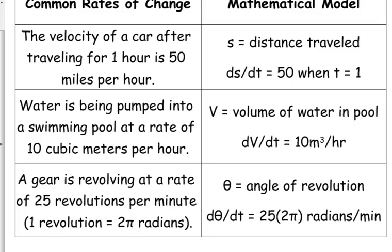Another one, we don't deal with these quite as much. A gear is revolving at a rate of 25 revolutions per minute. I've put a little note here that one revolution equals 2π radians. Because you need to express the rates of change at this angle in radians. So we're going to look at some of those on Monday.